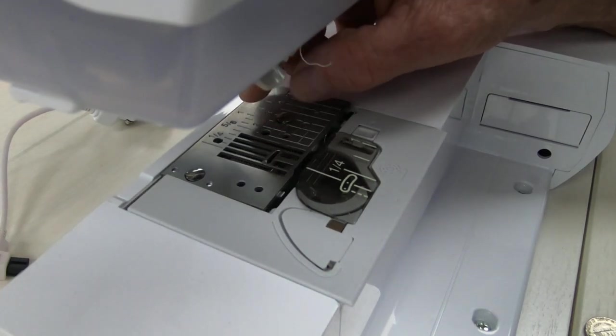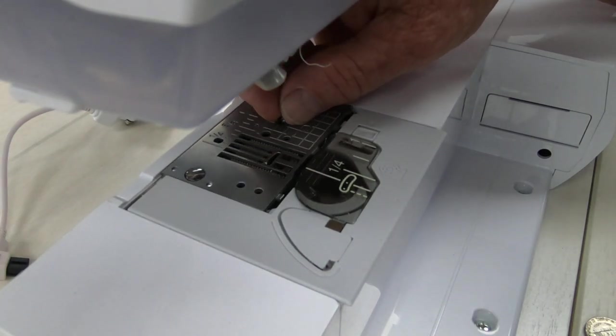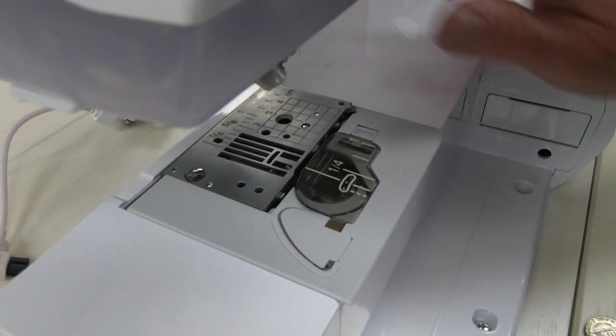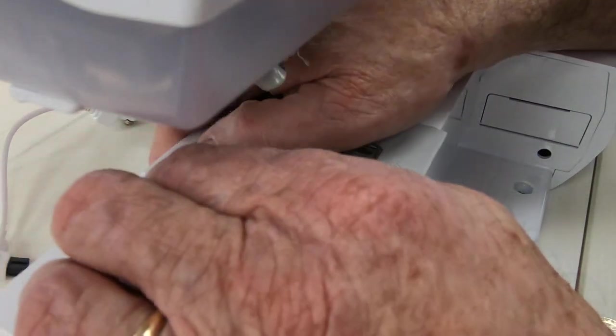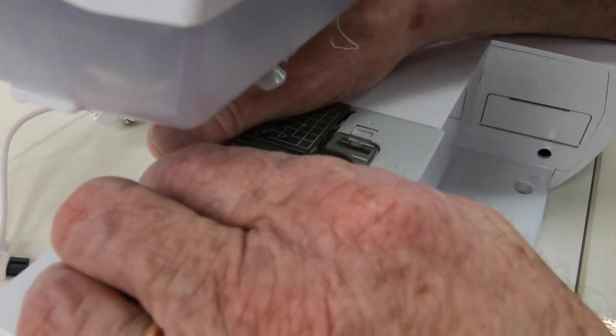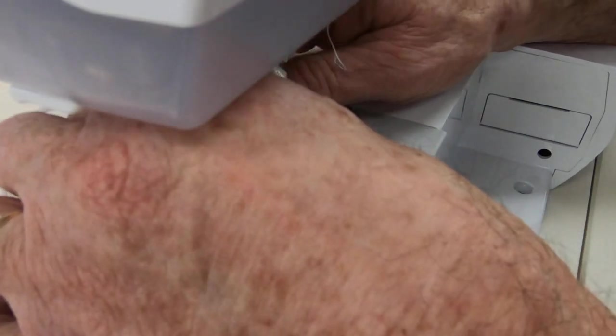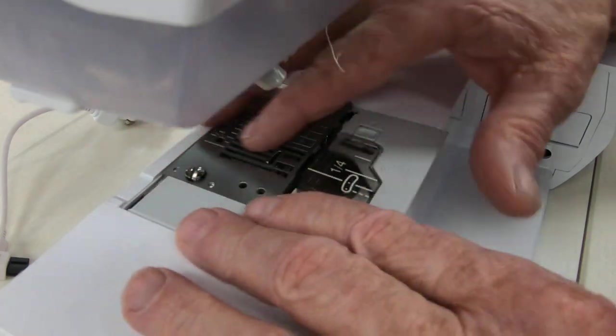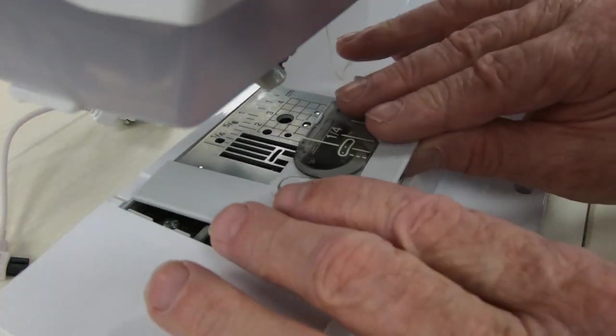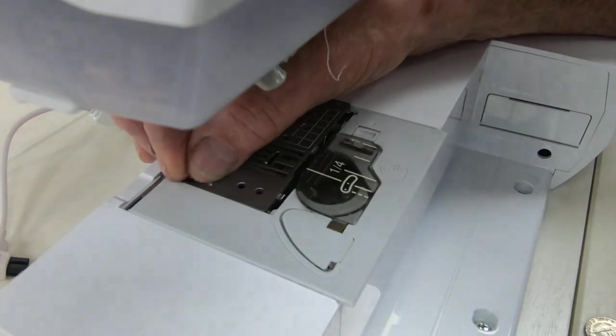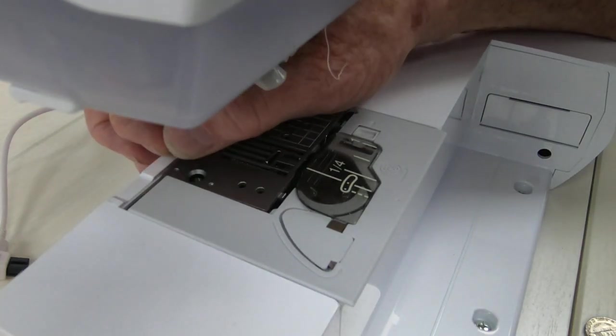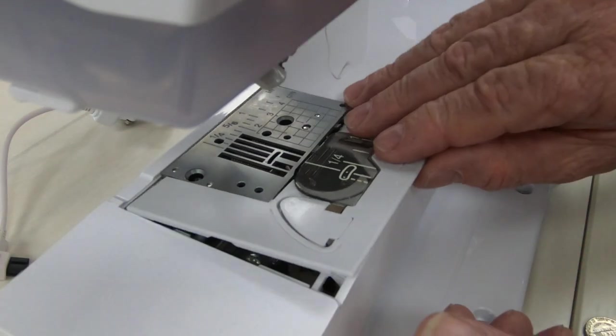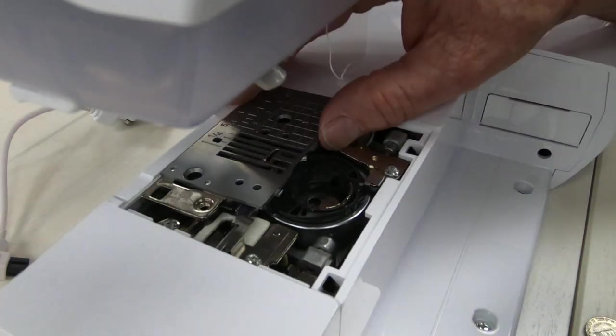When you take these little screws out, it's a good idea to have this bobbin cover on, because if you drop a screw, it doesn't fall up, it falls down. And it falls into the bottom of the sewing machine in here. And I don't care how much you turn it upside down and shake it, it will not come out. So I remove them, and then you can take everything off.